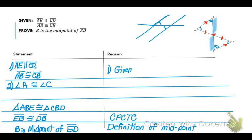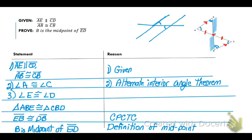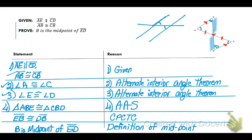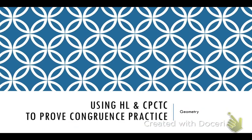Angle A equals angle C because they are alternate interior angles, and angle E equals angle D because they are alternate interior angles. That gives me two angles and a non-included side. So I can say triangle ABE is congruent to triangle CBD by angle angle side. As soon as I say that, I can say segment EB is congruent to segment DB because of CPCTC. And as soon as I say those two segments are congruent, I can say B is the midpoint by the definition of a midpoint. I think you have enough to start your homework in this section.